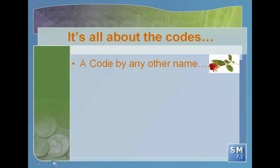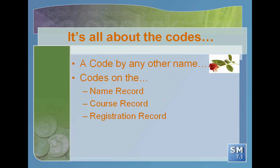Back to the code business. With apologies to Shakespeare, a rose by any other name would smell as sweet — and a code by any other name would be just as good. There are three main tables: the name record, the course record, and the registration record — and you need to make sure you've got your codes set up. On the name record, the three main areas for codes that are definitely important are your source code — how did the name find out about your program — your interest codes, and your occupation code or organization type code.